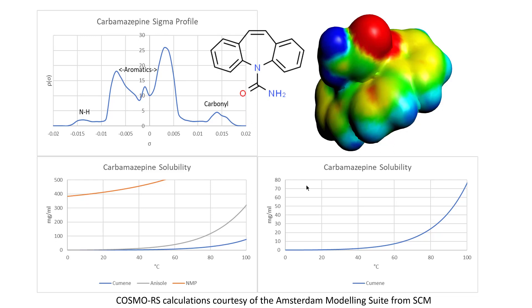To find a rational solvent choice we need to calculate — we can't do lots of solubility measurements, they're very hard work. The best way to do it is via COSMO-RS, a wonderful theory developed by Andreas Klamt many years ago. I'm using the version courtesy of the Amsterdam Modeling Suite. What you do is take your molecule — I'm using the well-known carbamazepine — do a DFT calculation, a quantum mechanical calculation, and you calculate the COSMO-RS model surface.